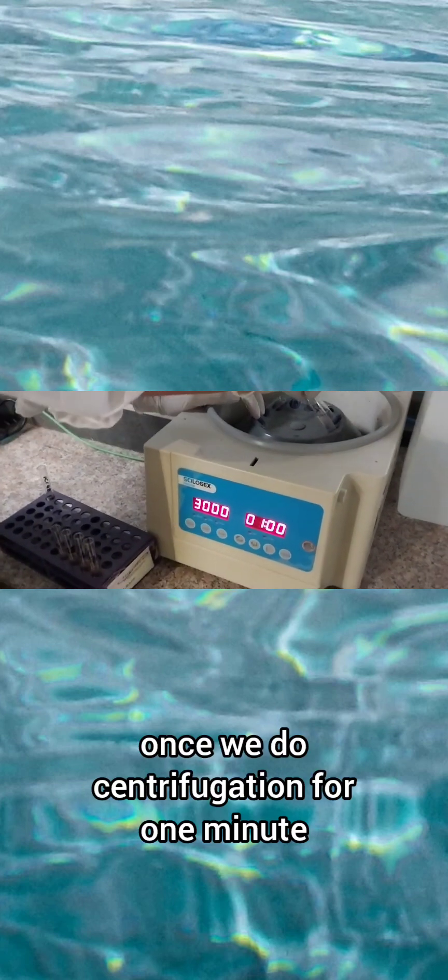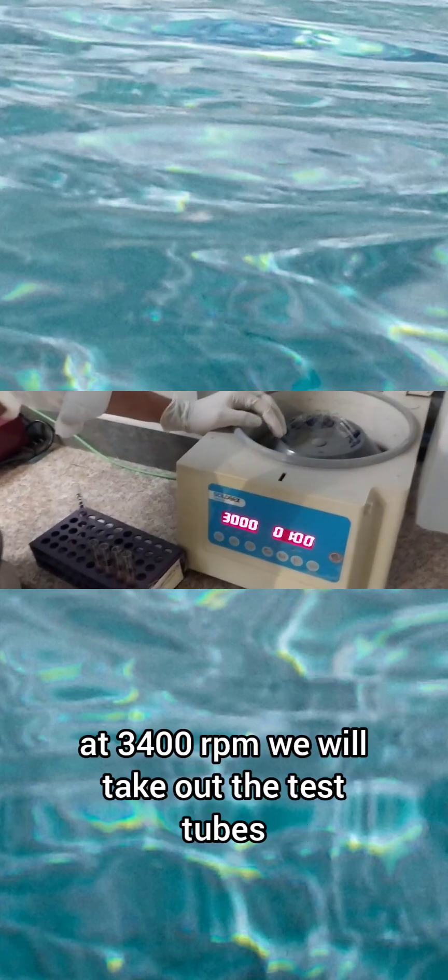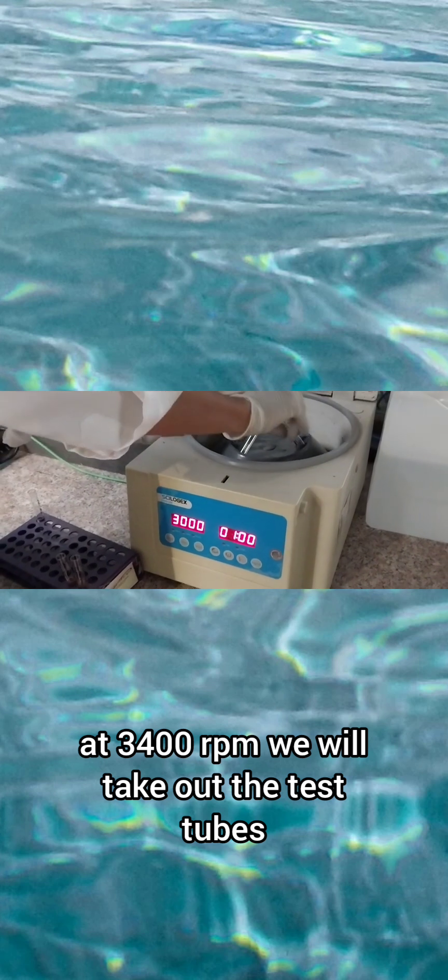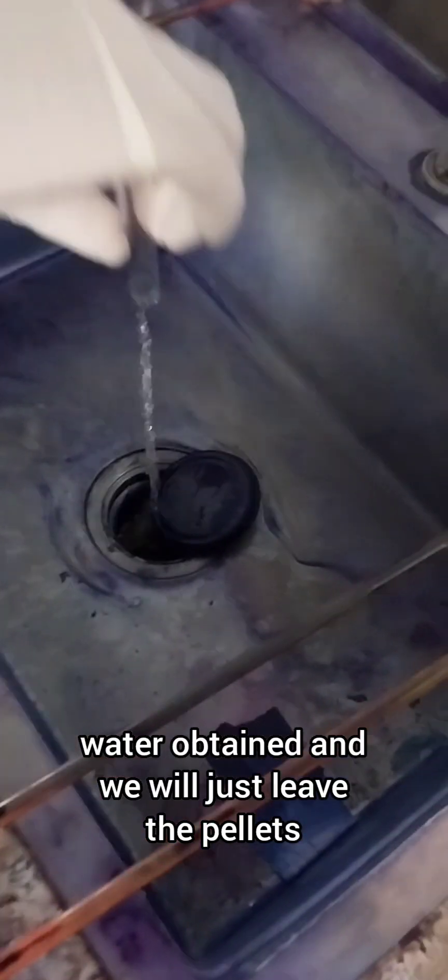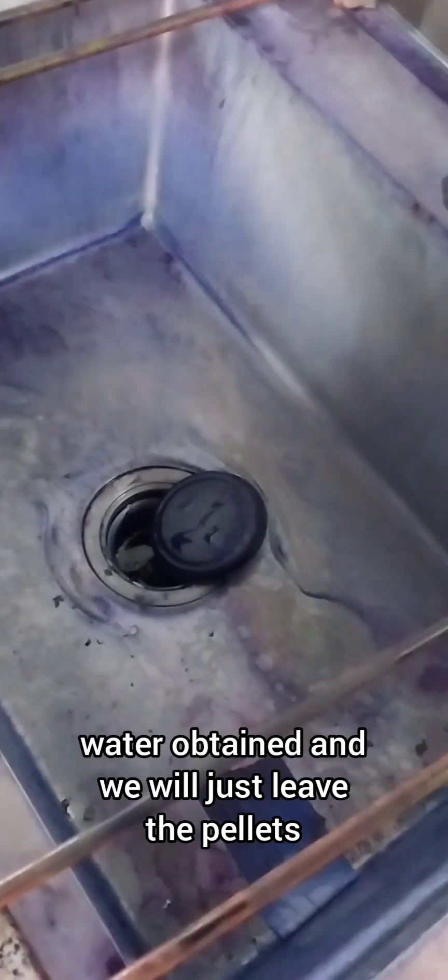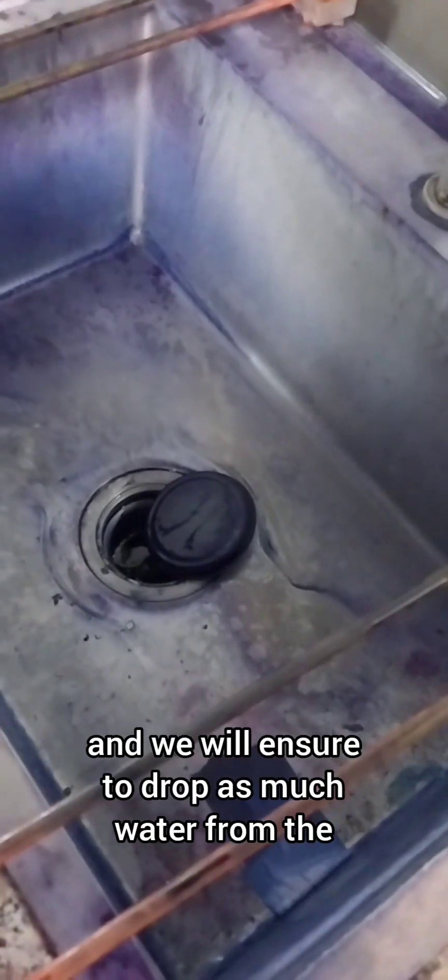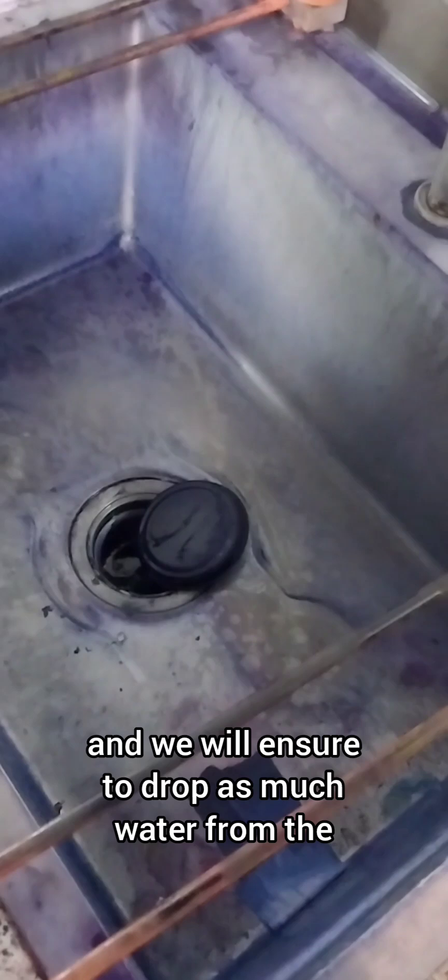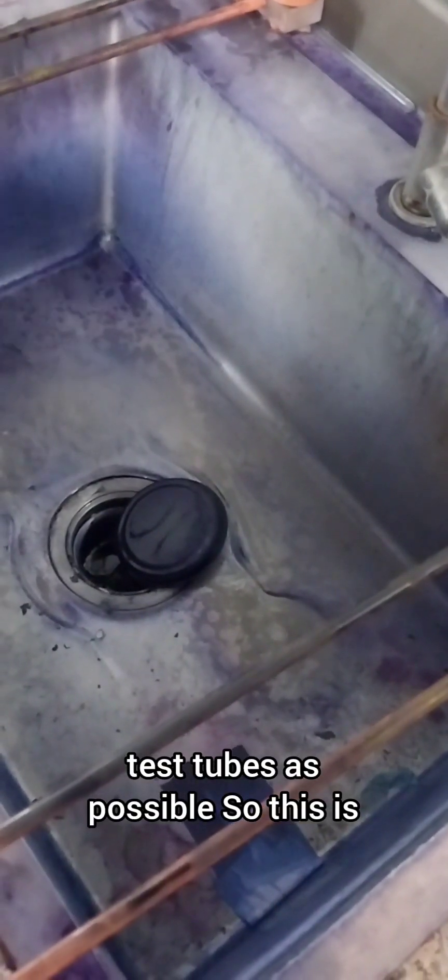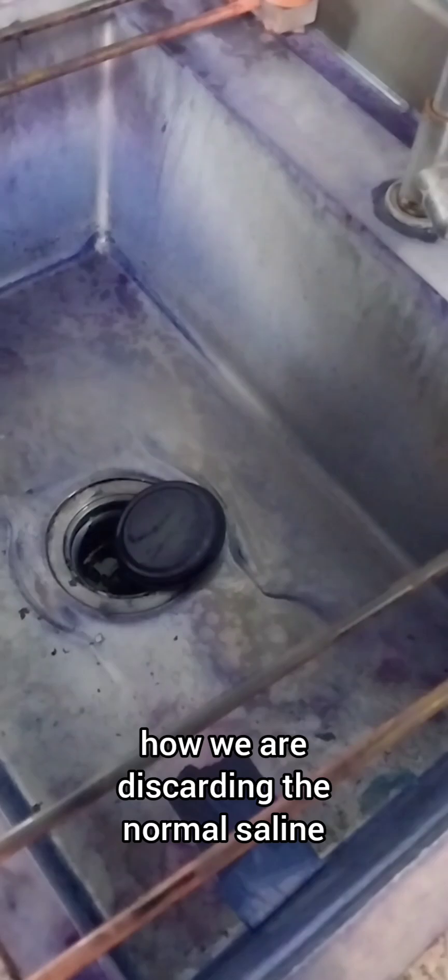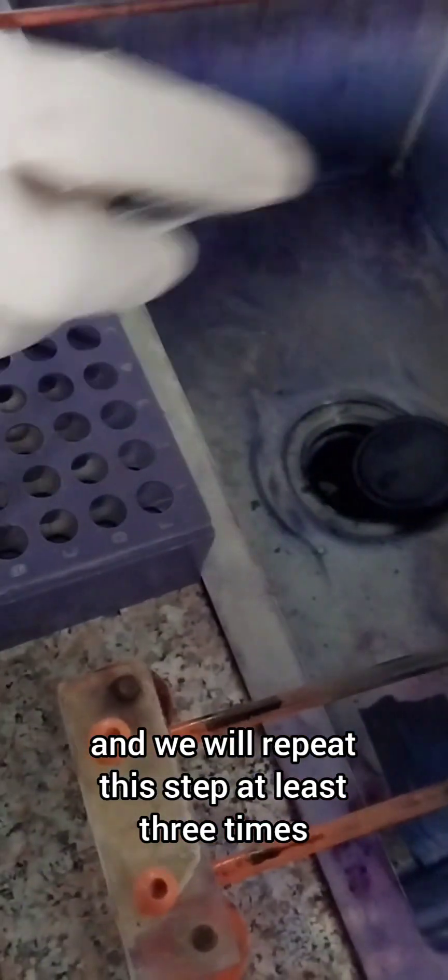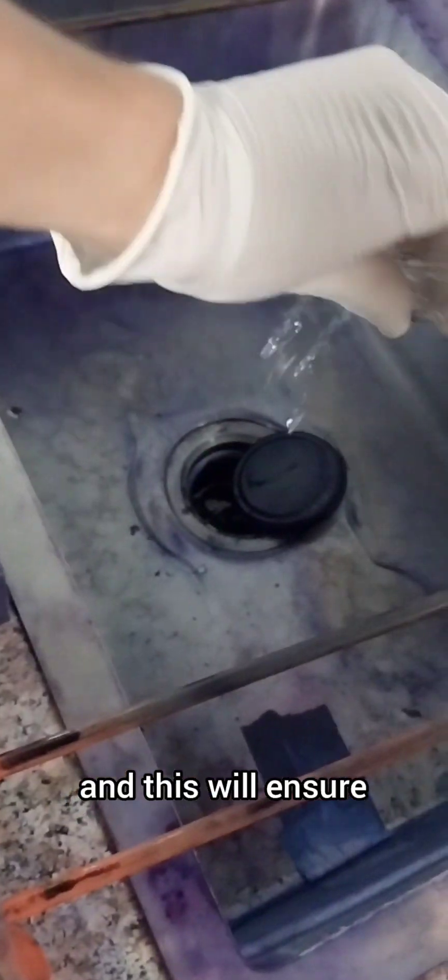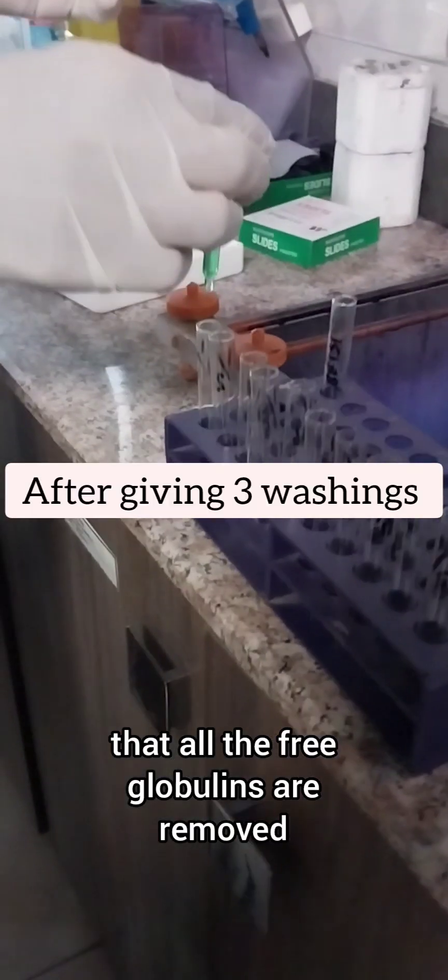Once we do centrifugation for one minute at 3400 rpm, we will take out the test tubes and discard the water obtained, leaving just the pellets. We will ensure to drop as much water from the test tubes as possible. This is how we are discarding the normal saline, and we will repeat this step at least three times. This will ensure that all the free globulins are removed.